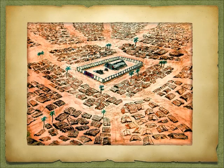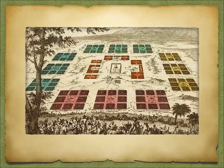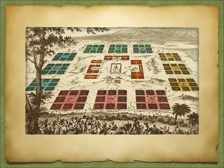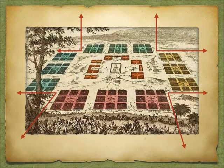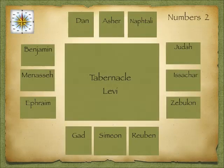I used to think that the camp looked like this — the Levites and the tabernacle in the middle and everybody else just sort of spread all the way around. Then many years ago I was in a bagel shop in Baltimore and there was a lithographic print that showed the camp in a specific order. In Numbers 2 we find out how the tribes are camped around the tabernacle and the Levites in the wilderness.